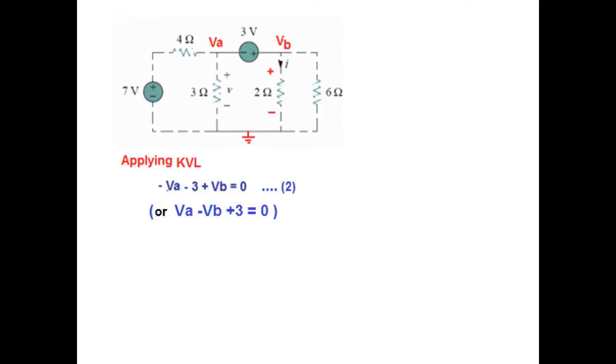Or the other method that we learned, VA minus VB and the current direction is same. So plus 3. So VA minus VB plus 3 equal to 0. We will get the same result by any technique.